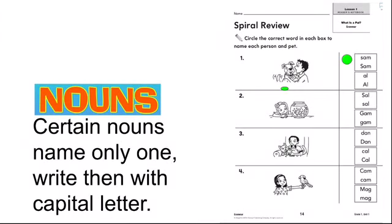There's a person and the pet. Let's see number one. I see a little dog. And his name is Sam. Sam. It's only one. Only for him. For that reason, it needs to be with capital letter. So where you see the word Sam in the box, you need to circle it. The one with the capital letter. Go ahead.